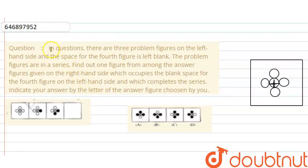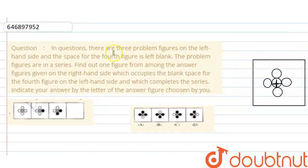Hi guys, now we are going to see what we are solving. In questions, there are three problem figures on the left-hand side and the space for the fourth figure is left blank. The problem figures are in series. Find out one figure from among the answer figures given on the right-hand side which occupies the blank space for the fourth figure on the left-hand side and which completes the series. Indicate your answer by the letter of the answer figure chosen by you.